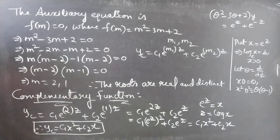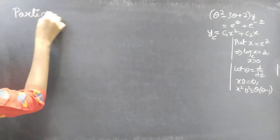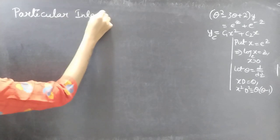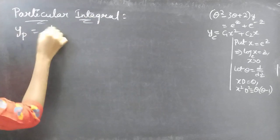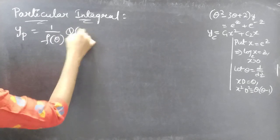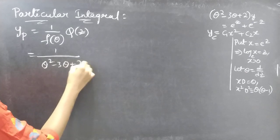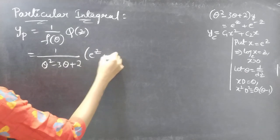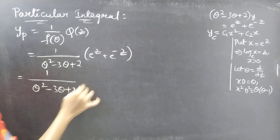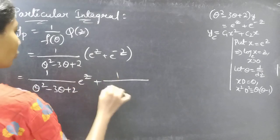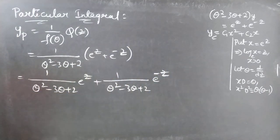Now let's find yp, the particular integral. We can find the particular integral using 1 by f(theta) into Q(z), where f(theta) is theta squared minus 3 theta plus 2 and Q(z) is e to the power z plus e to the power minus z. We write this as 1 by f(theta) into e to the power z, plus 1 by f(theta) into e to the power minus z, and find each term separately.